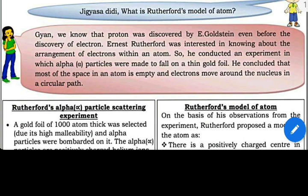Ernest Rutherford was interested in knowing about the arrangement of electrons within an atom. So he conducted an experiment in which alpha particles were made to fall on a thin gold foil. He concluded that most of the space in an atom is empty and electrons move around the nucleus in a circular path.